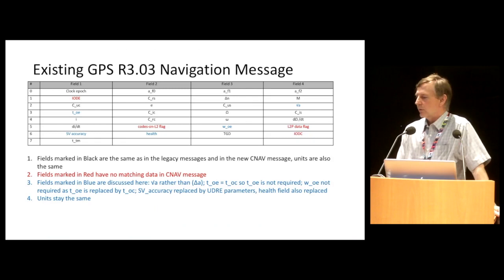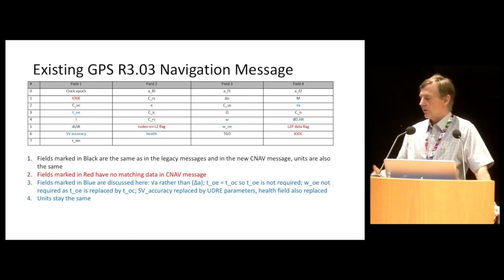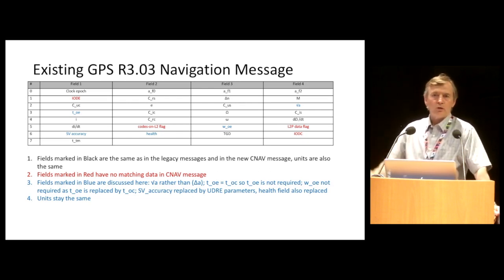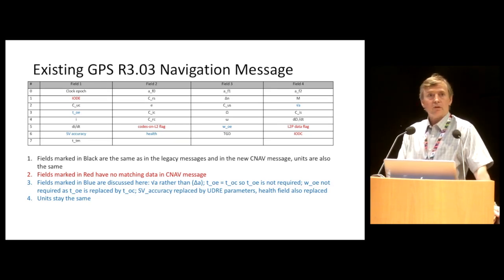What Oliver did was find the messages that are common between the legacy NAV and CNAB and slot them in, and then reused the slots that weren't used. So that makes good sense and there's very little change.